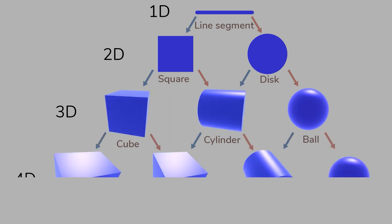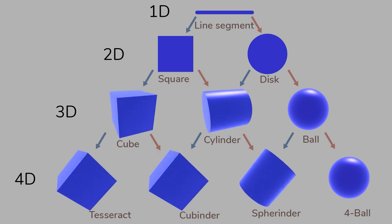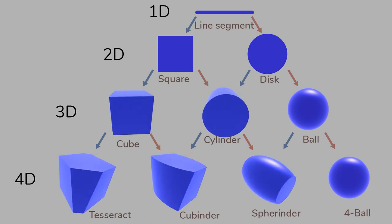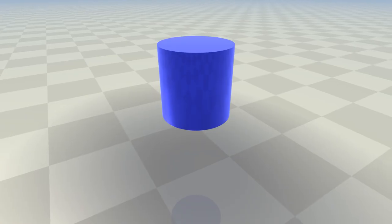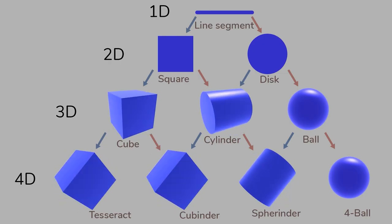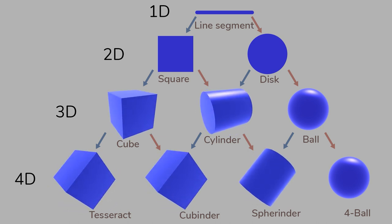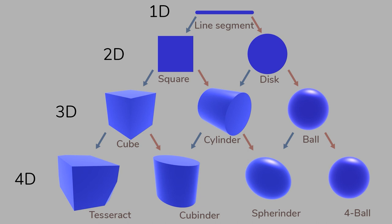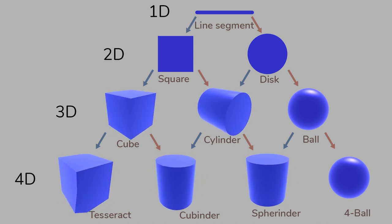Let's now look at 4-dimensional shapes. The extrusion of a cube gives us a tesseract. The revolution of a cube gives us a cubinder, a special 4-dimensional type of cylinder. If we look at a usual 3-dimensional cylinder from one side, it looks like a square or a rectangle, but from another side it looks like a circle. A cubinder looks like a cylinder or a cube from different sides. The extrusion of a cylinder gives us a cubinder again, but the revolution of a cylinder gives us a spherender — a 4-dimensional mix of a cylinder and a sphere. The extrusion of a ball gives us a spherender again, and the revolution of a ball gives us a 4-dimensional ball.